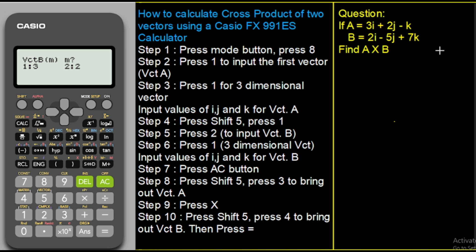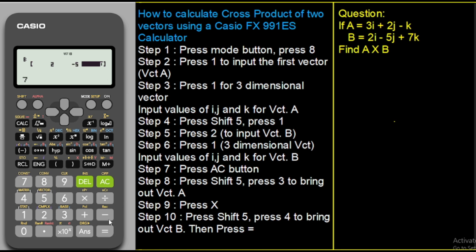Now we input vector B just like we did for vector A, working with the coefficients. The coefficient of I is 2, so press 2 and press equals. The coefficient of J is minus 5, so press minus 5 and press equals. The coefficient of K is 7, so press 7 and press equals. Vector B has components 2, −5, and 7.